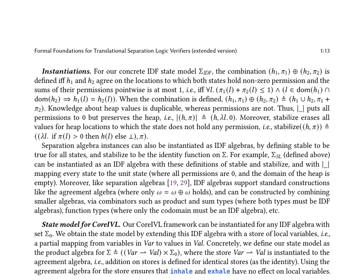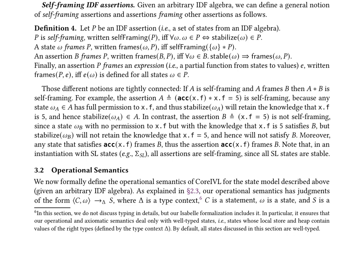The operational semantics of core IVL is presented with judgments of the form [T, U1-D436, U1-D714] → [H-T → delta, U1-D446'], where delta is a type context, U1-D436 is a statement, U1-D714 is a state, and U1-D446 is a set of states. The rules for operational semantics, given in Figure 6, capture the behavior of inhale, exhale, and other statements in core IVL, ensuring the stability of states.